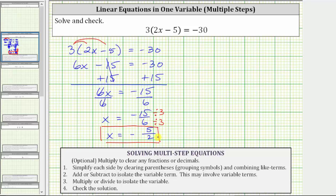Which means, if we substitute negative 5 halves for x in the original equation, it must satisfy the equation. And let's check this. Performing the substitution gives us three times the quantity two times negative 5 halves minus five equals negative 30. We now simplify the left side of the equation following the order of operations.